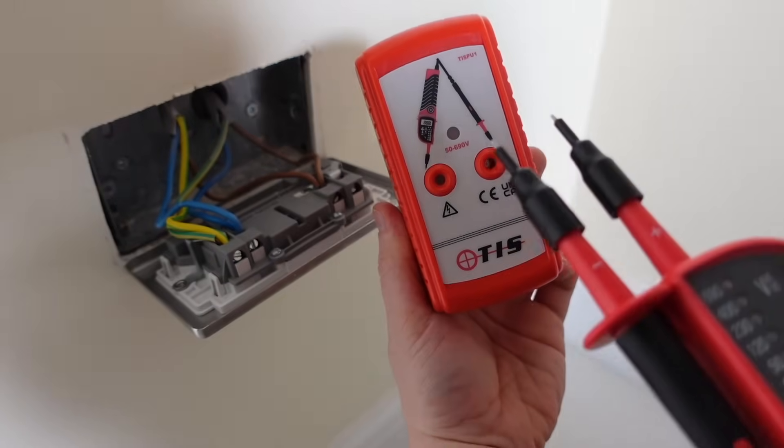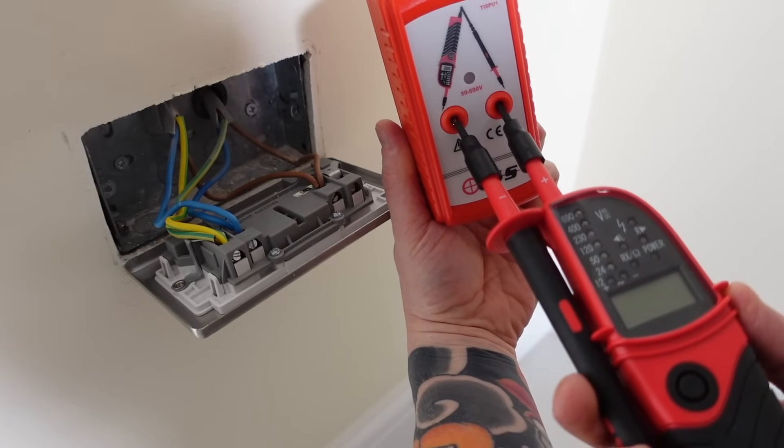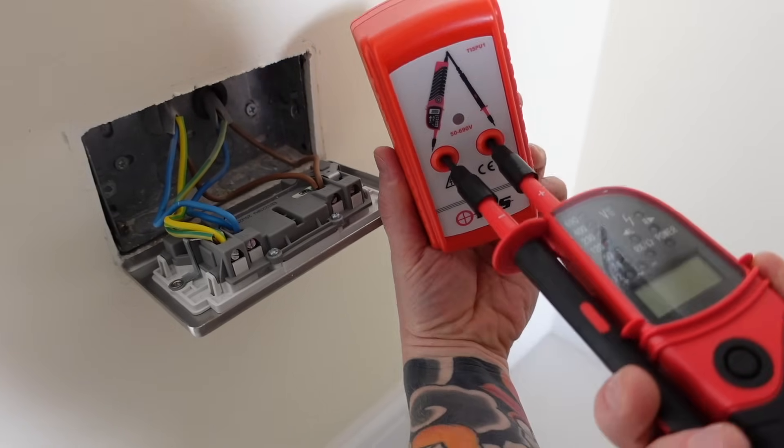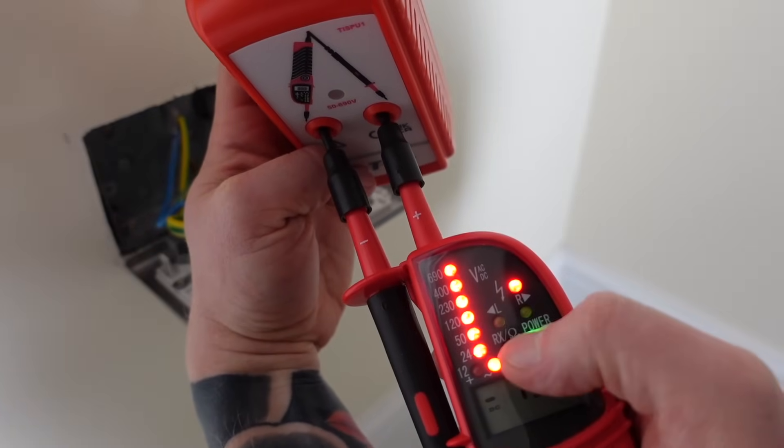So our proving unit here is a simple device that'll tell us if our voltage tester is working. We just insert the probes into the proving unit and you can see there we're getting a voltage reading on our volt tester.